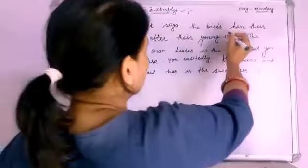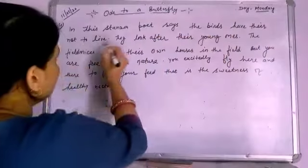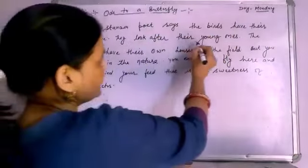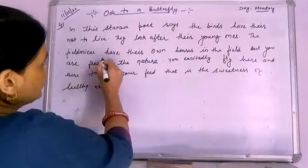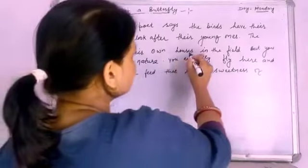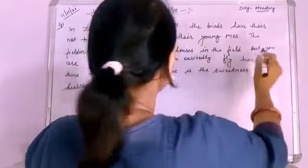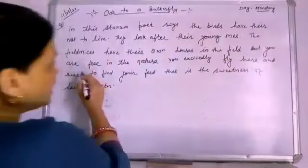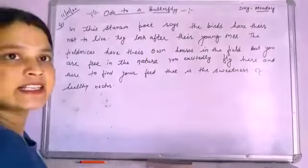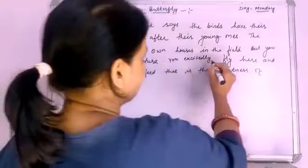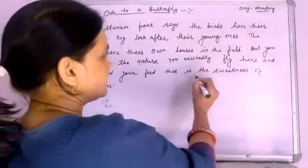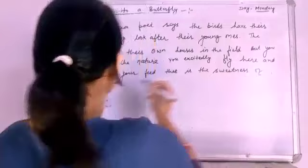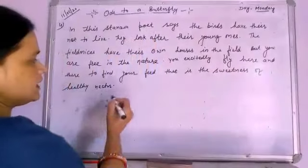In this stanza, the poet says the birds have their nests to live in. They look after their young ones. The field mice have their burrow houses in the field. But you are free in nature. You excitedly fly here and there to find your food — that is the sweetness of healthy nectar.